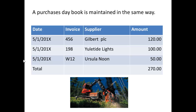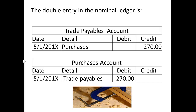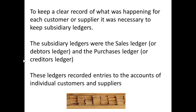A purchaser's daybook would be maintained in a similar way. Here, we've got invoices which have been received from Gilbert, Yuletide Lights, and Ursula Noon, which total £270. So, the double entry is to credit trade payables with £270 and to debit purchases with £270.